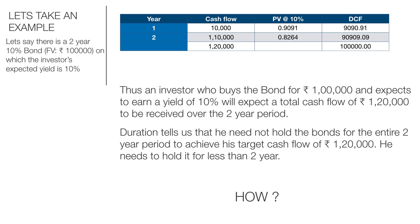Herein comes the concept of duration. Duration tells us that the investor, to achieve his targeted cash flow, need not actually hold the bond for two years. In fact, he can hold it for less than two years and still achieve his targeted cash flow of 1 lakh 20,000. The first-year coupon of 10,000 rupees received at the end of year one will obviously not be kept idle — it is going to be reinvested, and this reinvestment will earn additional income, helping the investor attain his targeted cash flow much before two years.